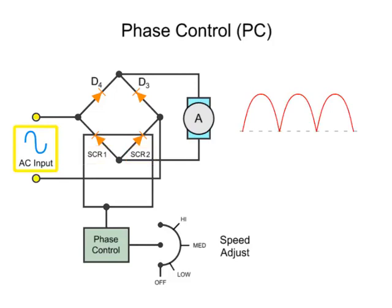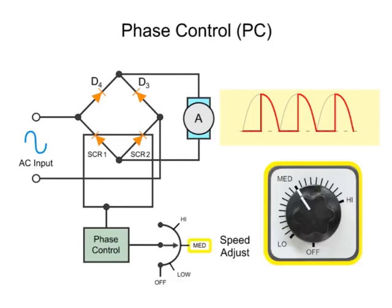This diagram depicts an AC sinusoidal wave being altered by a full-wave rectifier to produce partial half-waves. The partial half-wave output produced is reduced based on when the firing device is activated.